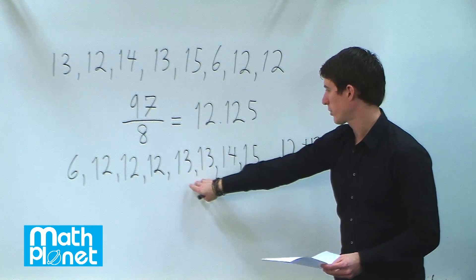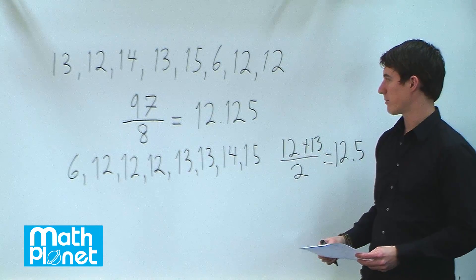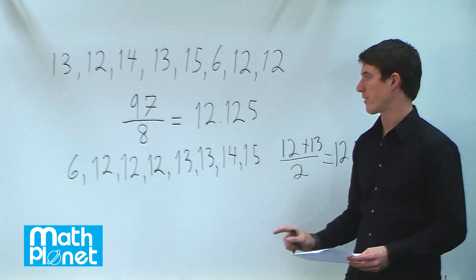So we have two 13s and three 12s. So 12 is the mode since it occurs the most number of times. So we have three different averages.